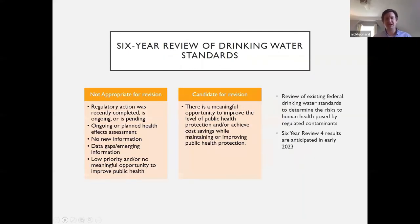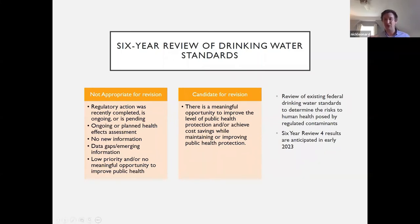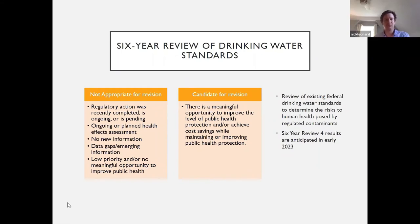Once a standard is set, there's a requirement to review all drinking water standards every six years. EPA reviews these standards to determine whether there are risks to human health posed by those regulated contaminants that it hasn't previously considered. A contaminant is a candidate for revision if there is a meaningful opportunity to improve the level of public health protection or achieve cost savings. The next six-year review results are anticipated in early 2023.